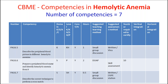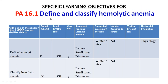Regarding competency 16.7 on blood bank and cross match, we need to check whether this is a placement error or whether it should be in the blood bank competencies. Coming to the first competency — define and classify hemolytic anemias — a lecture is enough, or you can give an assignment to find out the definition and classification since it is not a very large classification.